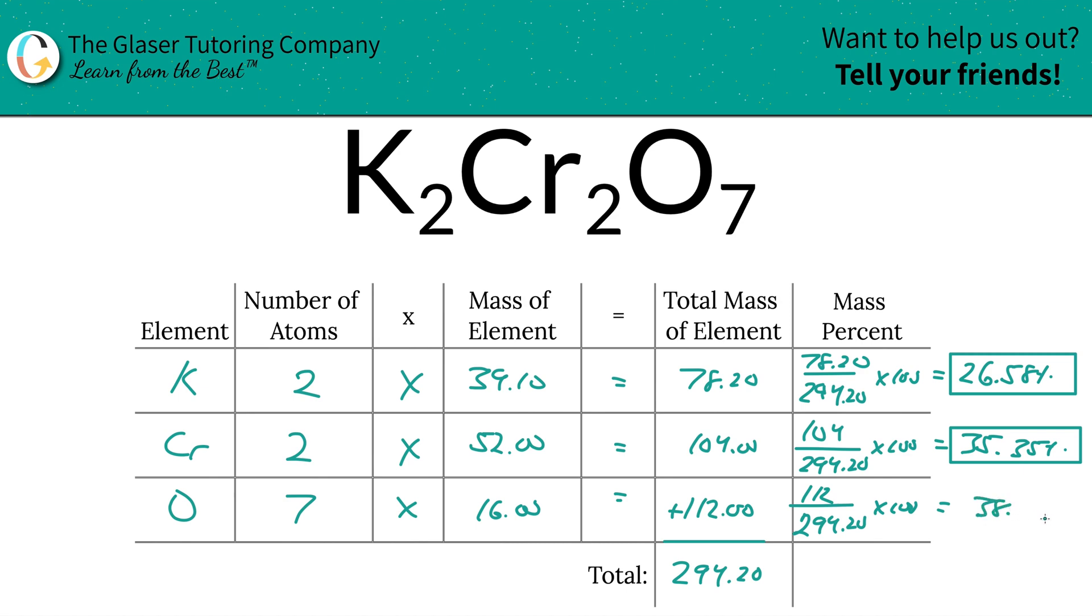When you add these percentages up, which you should do just to check yourself, they should add up to be 100%. If you're off by a hundredth, it might be because of rounding, but you should be within the ballpark. So yeah, thanks for watching. That's how you find the percent of potassium, chromium, and oxygen inside of potassium dichromate.